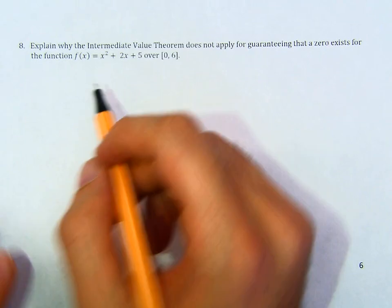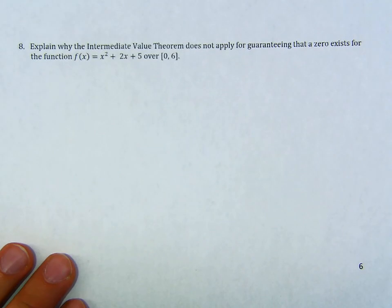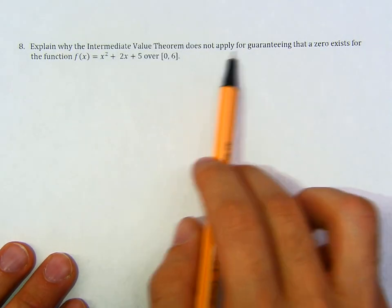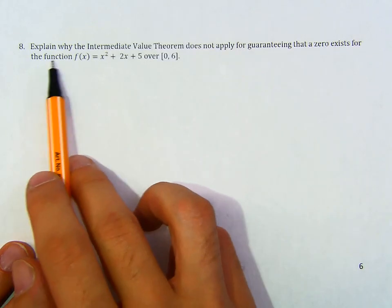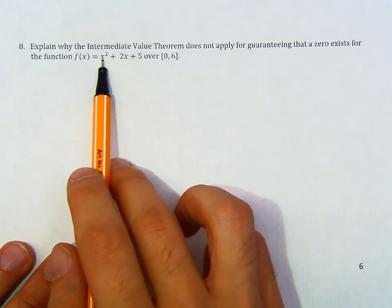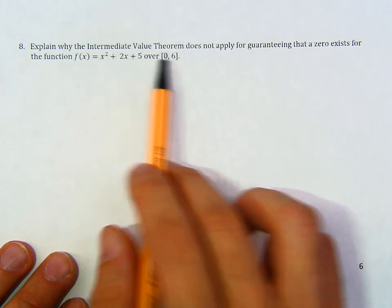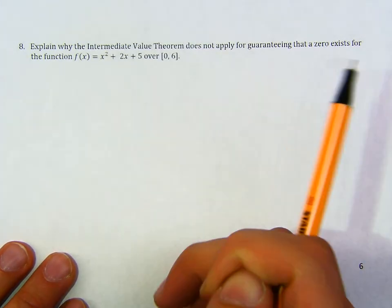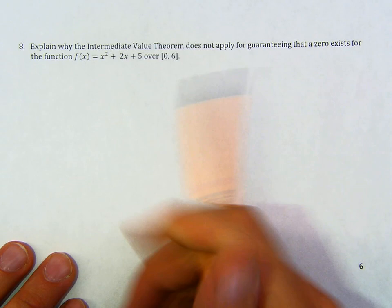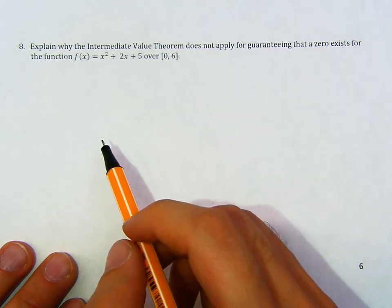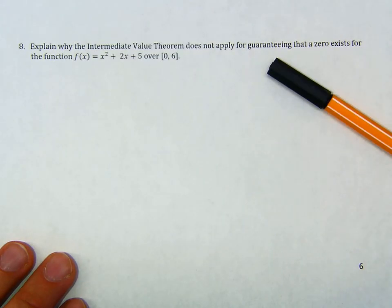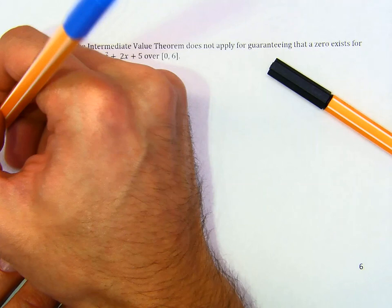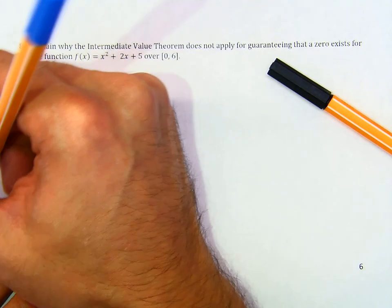Part 8. Explain why the intermediate value theorem does not apply for guaranteeing that a zero exists for the function x squared plus 2x plus 5 over this interval. Let's see why the intermediate value theorem doesn't work. Let's go through each of the conditions: one, two, and three.